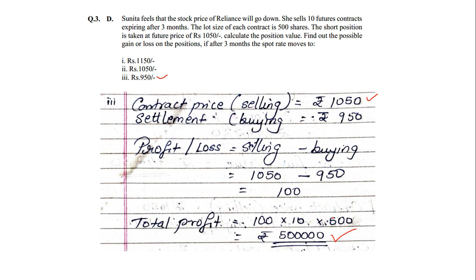In all three cases it was a short position, so the contract price was on the selling side and settlement was on the buying side. We just apply the selling minus buying formula to get the profit or loss. With that this particular sum comes to an end.